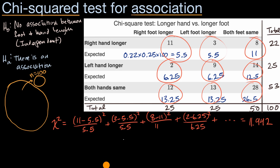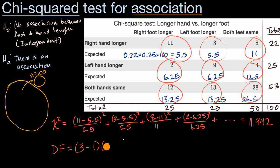Before calculating the p-value, we need to determine the degrees of freedom. We have a 3×3 table, so degrees of freedom = (rows − 1) × (columns − 1) = 2 × 2 = 4. Another way to think about it: if you know four of the data points and the totals, you can figure out the other five.